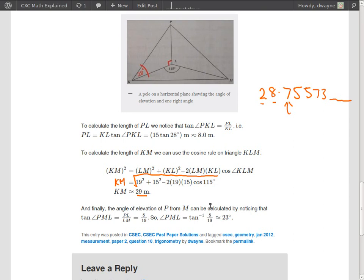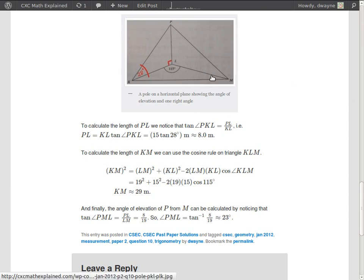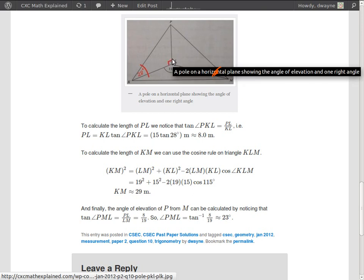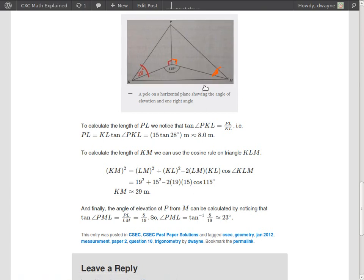And then we want to calculate the angle of elevation of P from M. Let me clear this. Angle of elevation, well, that's this guy here. And to calculate the size of that angle. Well, he lies, remember, I showed we had two right angles. We had this right angle here, and we had this right angle here. And so we can use, we can go back to using our trigonometric ratios.